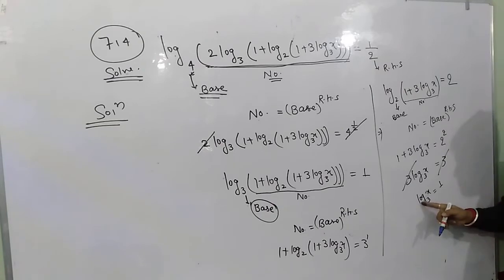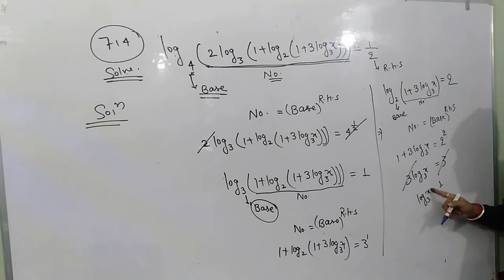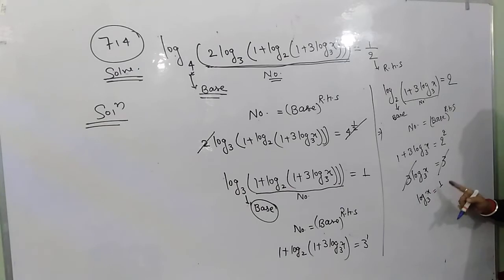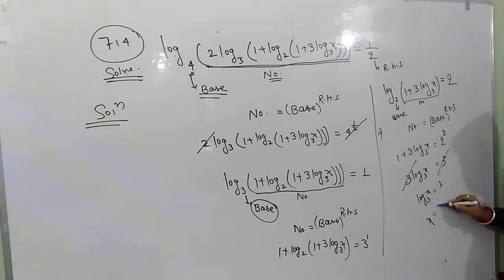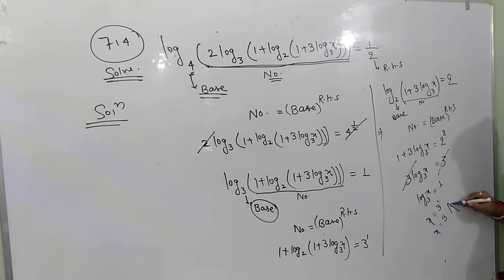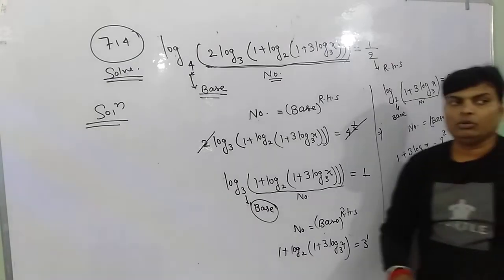अब: log x क्या हो गया — number। 3 क्या हो गया — base। 1 क्या हो गया — RHS। Formula: number = base to the power RHS. तो x = 3 to the power 1. Final answer: x is equal to 3. Note कीजिए।